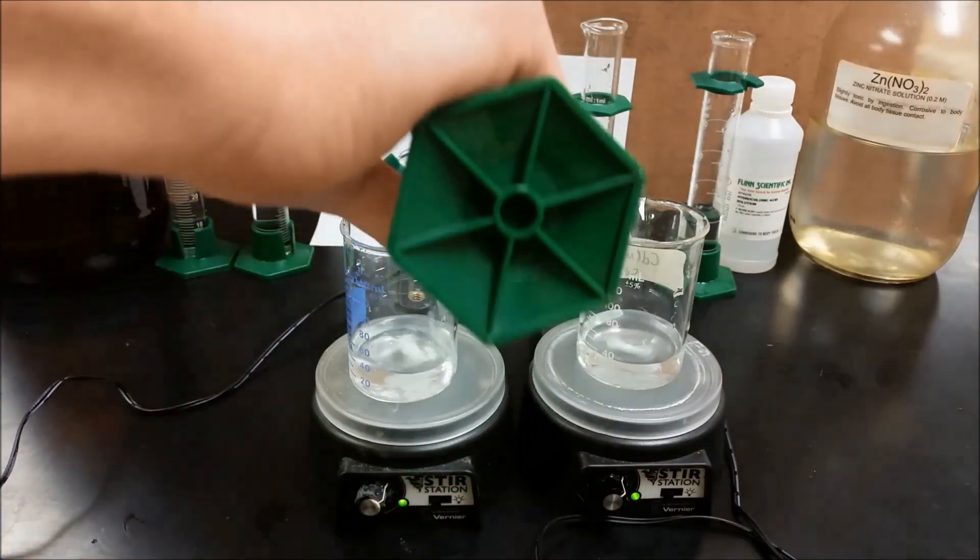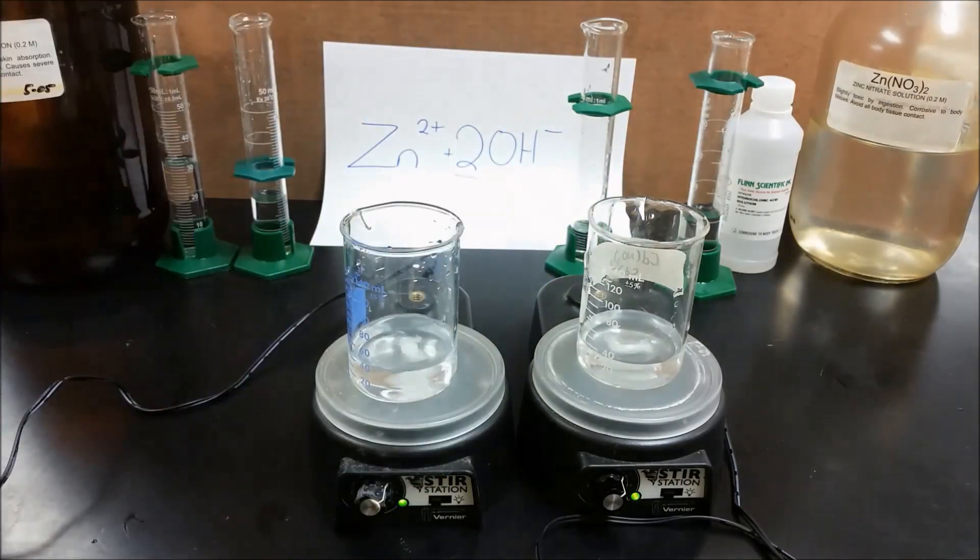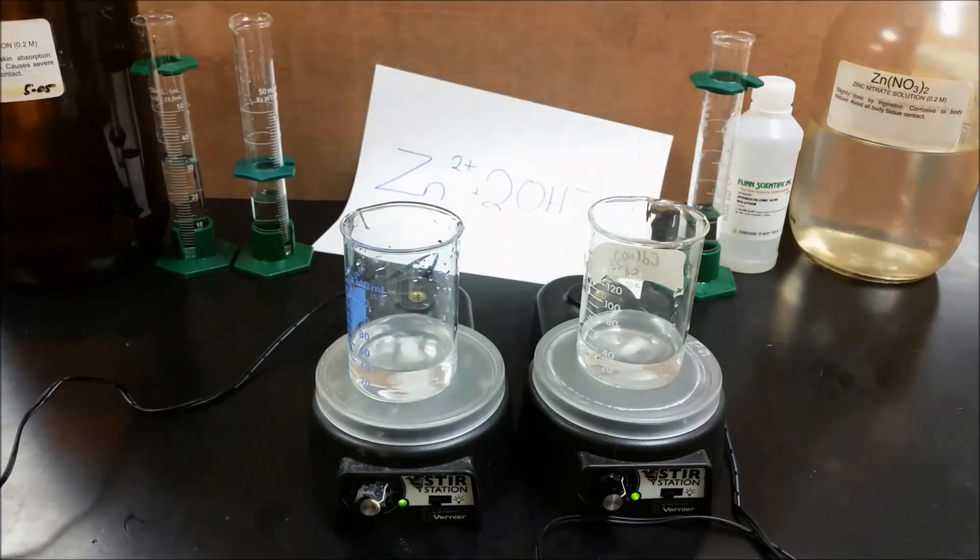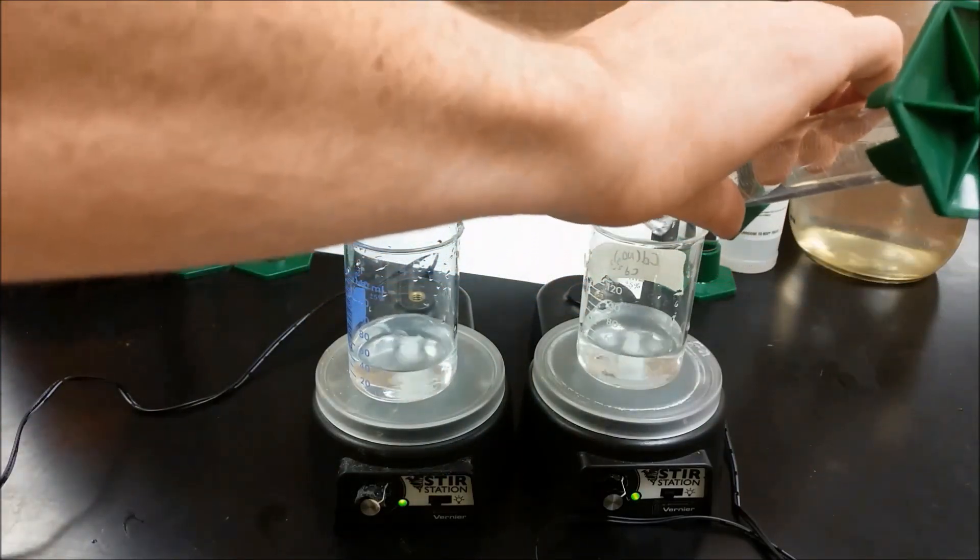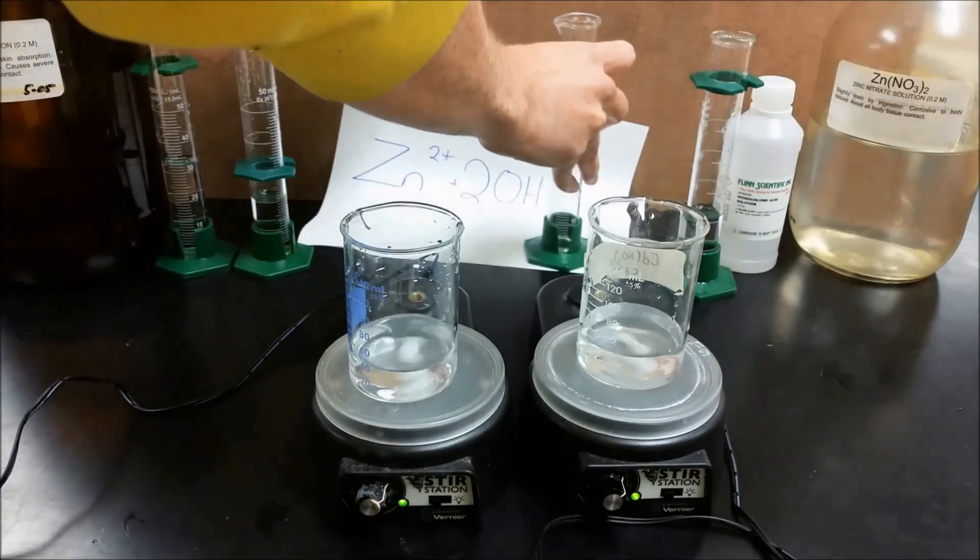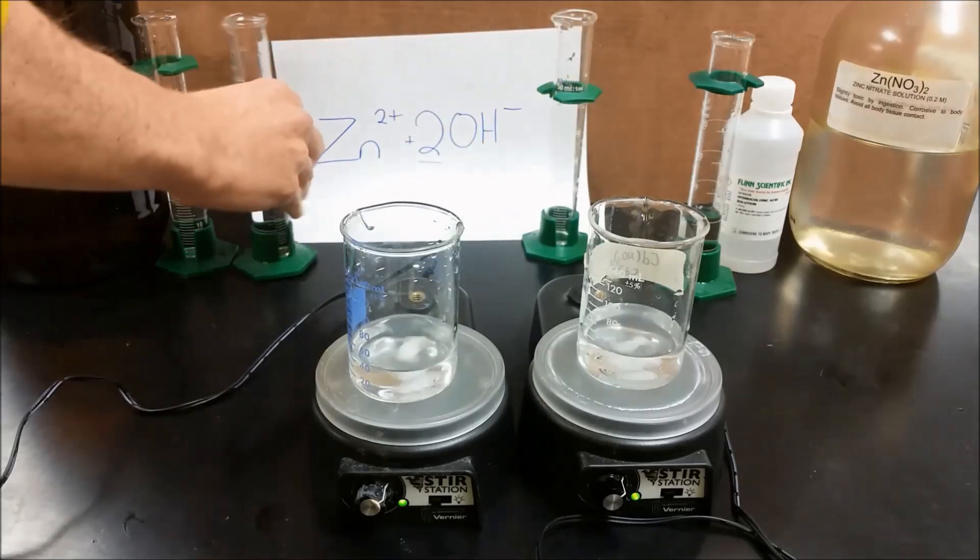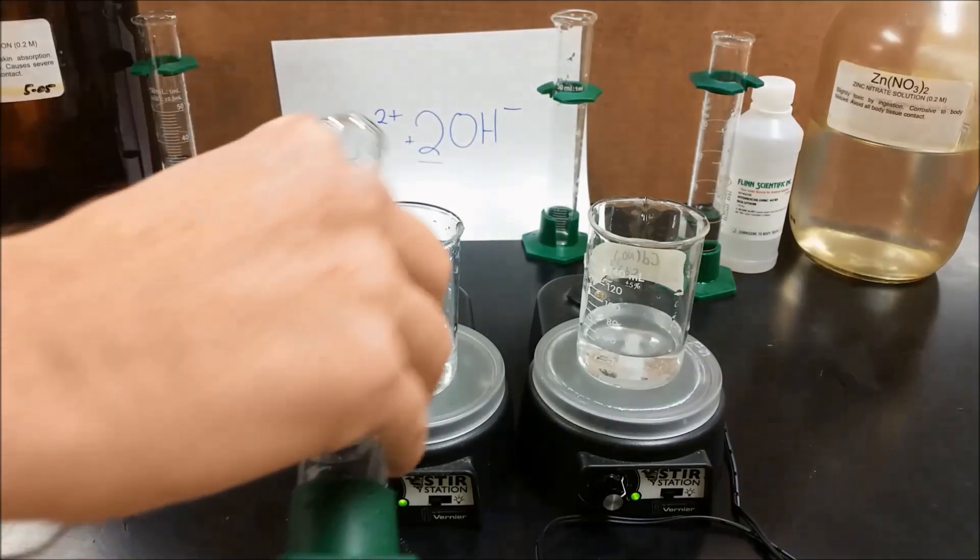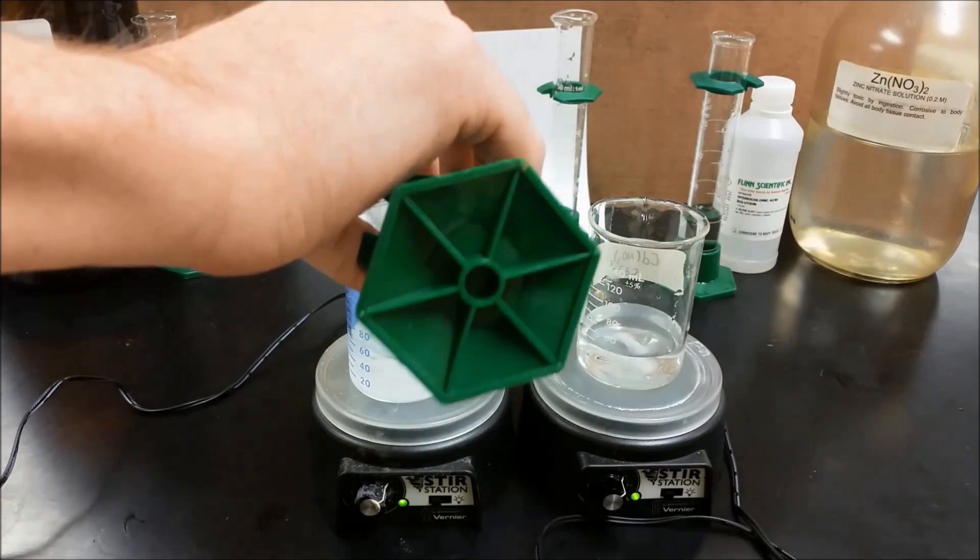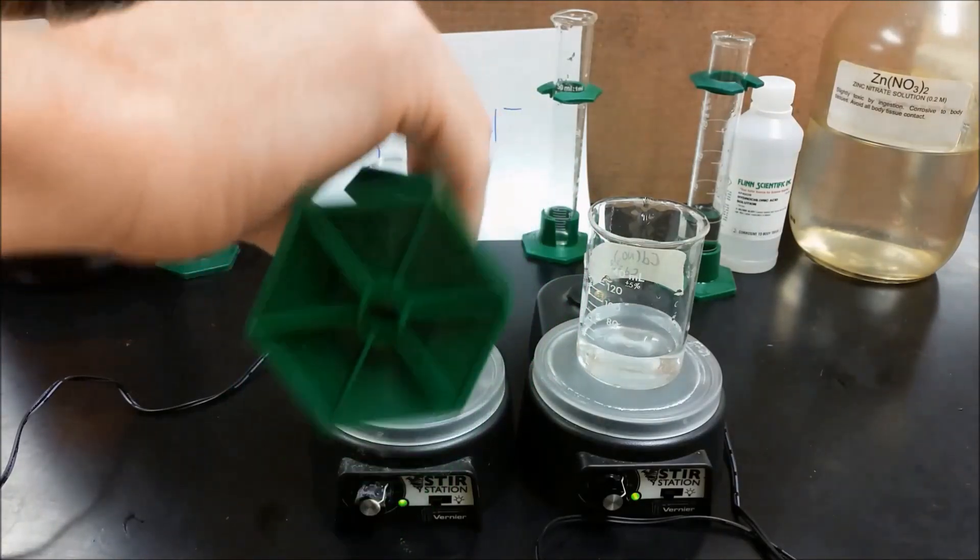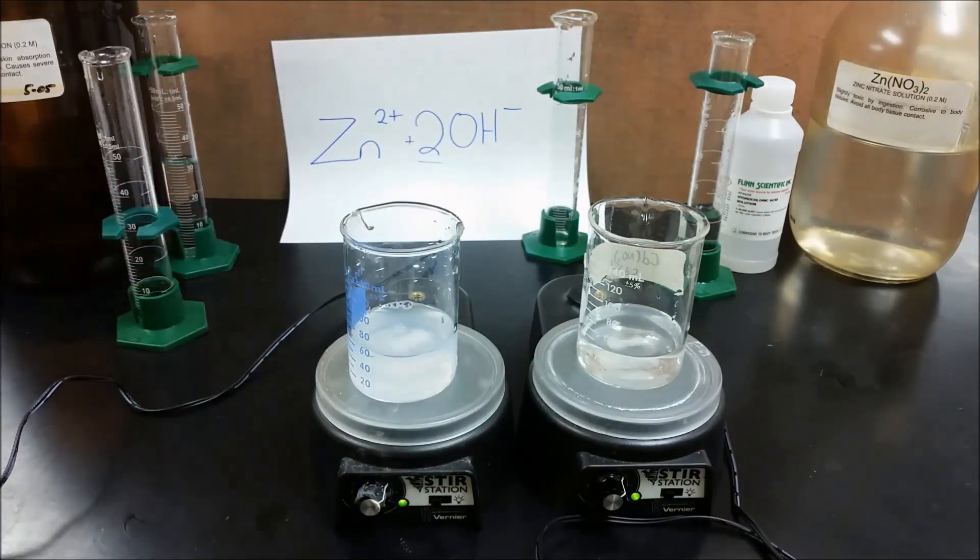So 10 milliliters of zinc solution along with another 10 milliliters of zinc solution. We're going to mix with that 20 milliliters of hydroxide solution in the same concentration. And I want to pause there to show that we formed a precipitate, so we have some zinc hydroxide here that we formed by mixing the zinc and the hydroxide together.